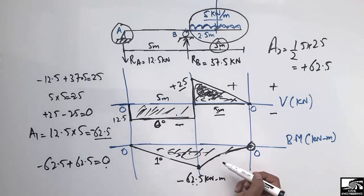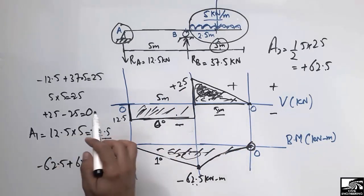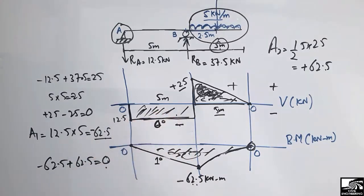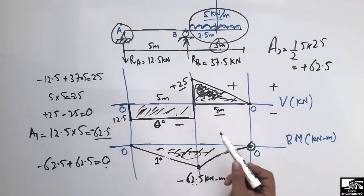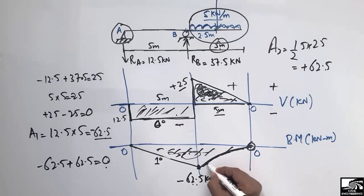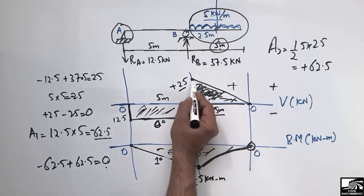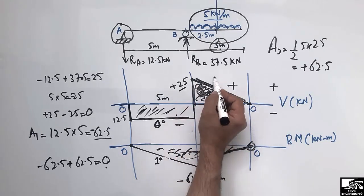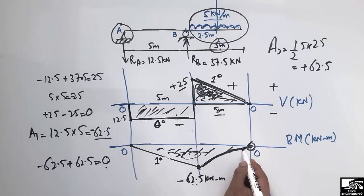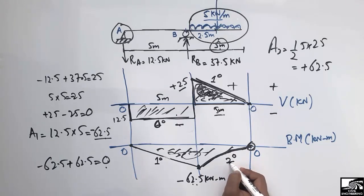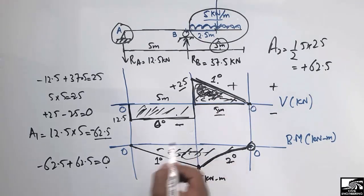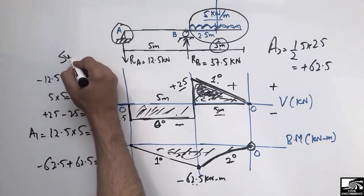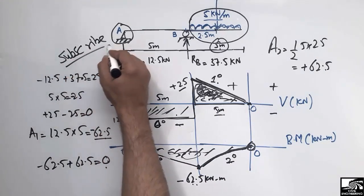This method can be applied to any type of beam. The bending moment diagram is always one degree higher than the shear force diagram: where the shear force was a constant (zero-degree) line, the bending moment is a first-degree line; where the shear force was a first-degree line, the bending moment is a second-degree curve. Don't forget to subscribe to the channel for more engineering videos. Thank you for watching.